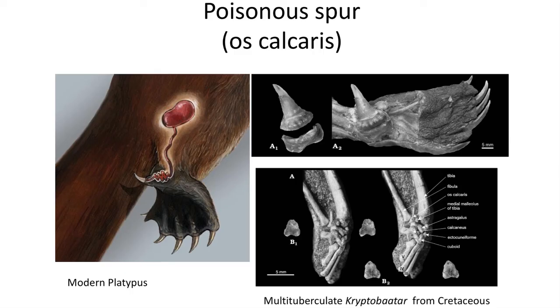Monotremes and several known multituberculate fossil skeletons exhibit bony spurs on their ankles in male individuals. In the living platypus, these spurs connect to a poisonous gland which injects venom and is thought to play a role in inter-species competition during the breeding season, and was likely found in the common ancestor of both groups.